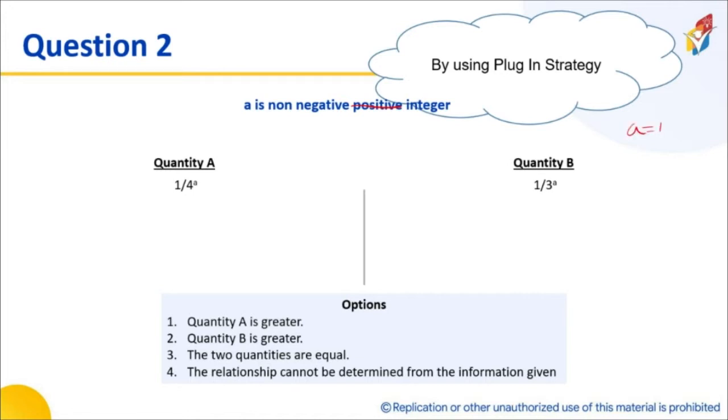This again is a question that requires you to think, or you can just go ahead and substitute values. If I put a equal to 1, what happens? If I put a equal to 1, this quantity is 1 by 4, this quantity is 1 by 3. Obviously 1 by 3 is more than 1 by 4. If I put a equal to 2, what happens?